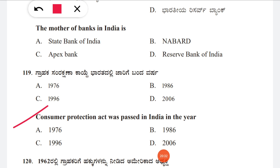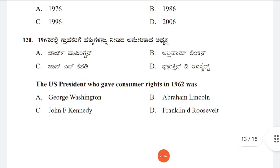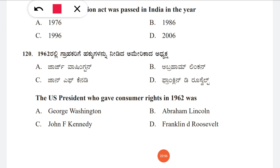Question 119: The Consumer Protection Act was passed in India in the year — option A: 1976, B: 1986, C: 1996, D: 2006. The correct answer is B, 1986. Question 120: The US president who gave consumer rights in 1962 was — option A: George Washington, B: Abraham Lincoln, C: John F. Kennedy, D: Franklin D. Roosevelt. The correct answer is C, John F. Kennedy.